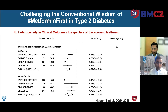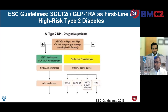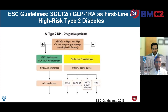Should patients be started on metformin first before staging onto an SGLT2 inhibitor? Across 11 randomized clinical trials, there's virtually no variability based on baseline metformin use. Clinical practice guidelines — including the ESC guidelines — have evolved such that SGLT2 inhibitors or GLP-1 receptor agonists should be started based on risk, irrespective of whether or not they were previously treated with metformin. If they have concomitant ASCVD and type 2 diabetes, they qualify and should be on therapy.